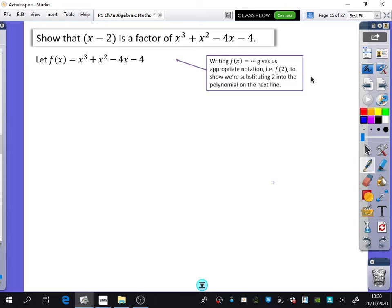And so I've said here, I'm going to say let f of x equal this function. And by writing f of x equals blah, blah, blah, it gives us the appropriate notation to show that we're substituting 2 into the polynomial on the next line. So just a quick way of showing that I'm going to substitute in 2.